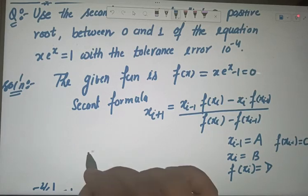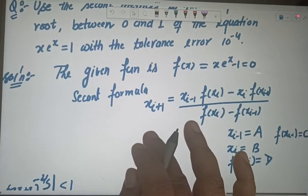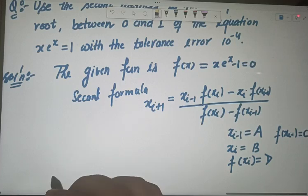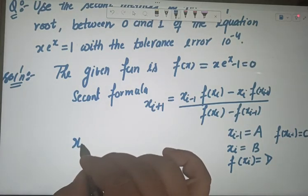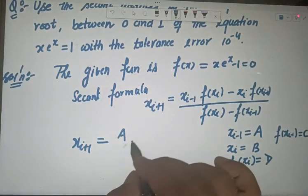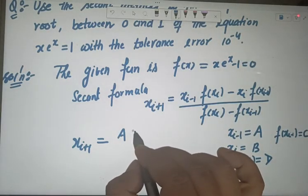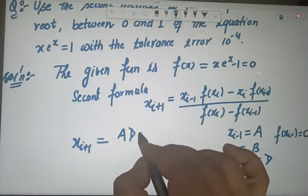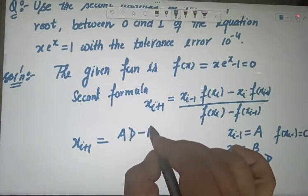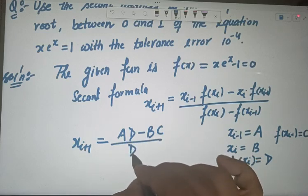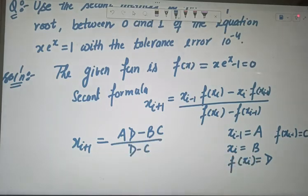So what about your formula in this form? Your formula becomes: x_{i+1} = (a·d − b·c) / (d − c).